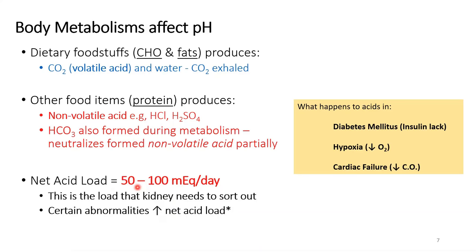This applies to a person eating a slightly more protein-rich diet, which is the case these days in most parts of the world — unless the person is vegetarian or vegan. Generally speaking, non-vegan and non-vegetarian people consume more protein than other food groups, and hence the net acid secretion load is about 50 to 100 milliequivalents per day.